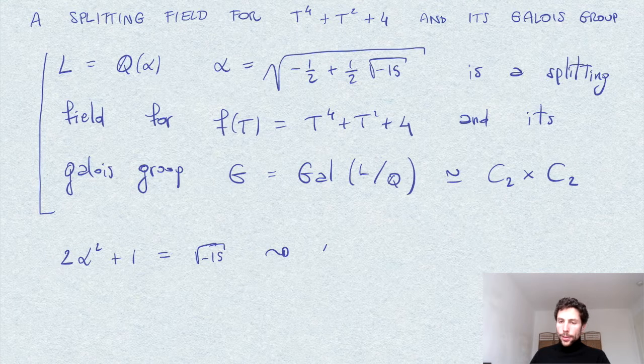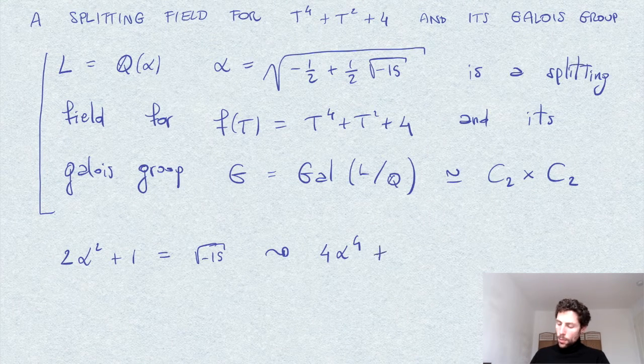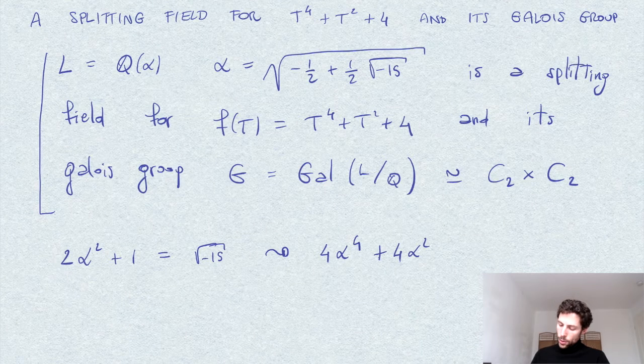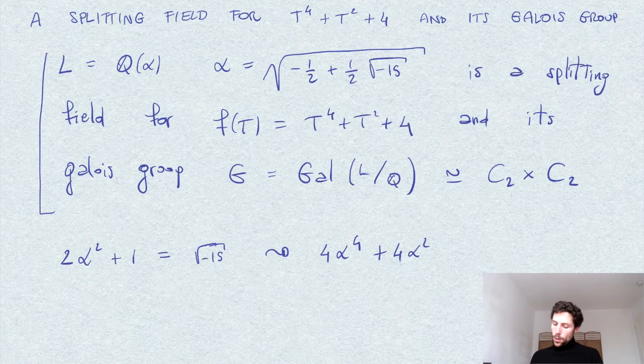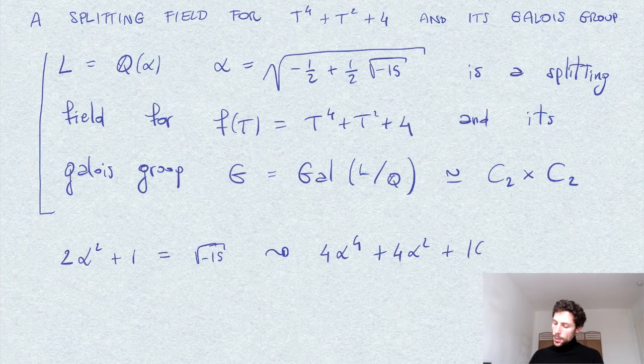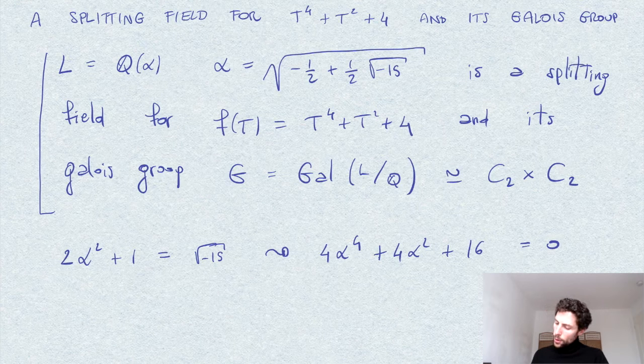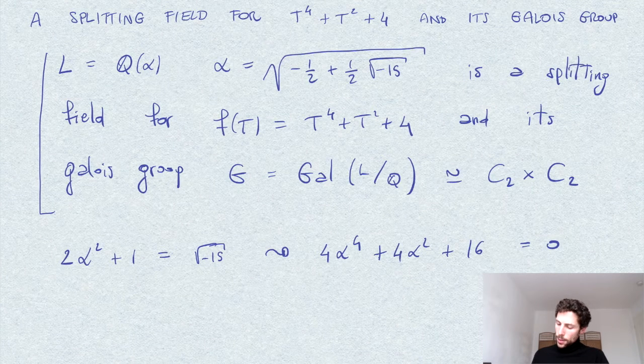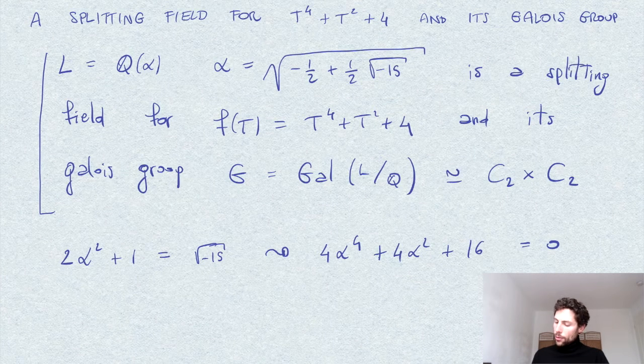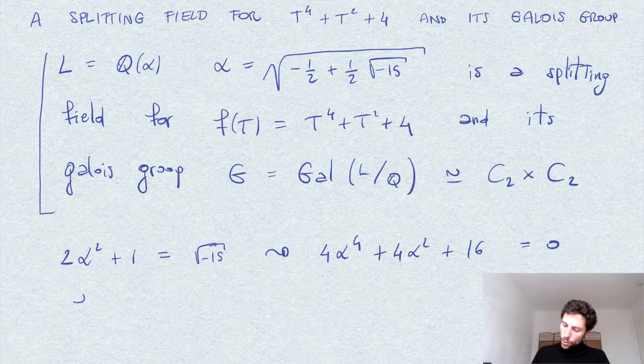So we get 4 times alpha to the power 4 plus 4 alpha squared plus 1 plus 15, which is plus 16 equal to 0. If you factor out 4, this is precisely the polynomial f evaluated at alpha. So alpha is a root of f.